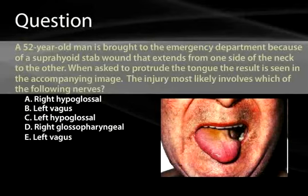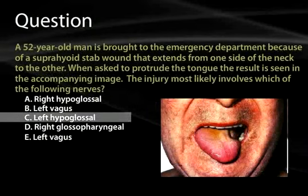A 52-year-old man is brought to the emergency department because of a suprahyoid stab that has extended from one side of the neck to the other. When asked to protrude the tongue, the result is seen in the accompanying image. The injury most likely involves which of the following nerves? The answer would be the left hypoglossal.